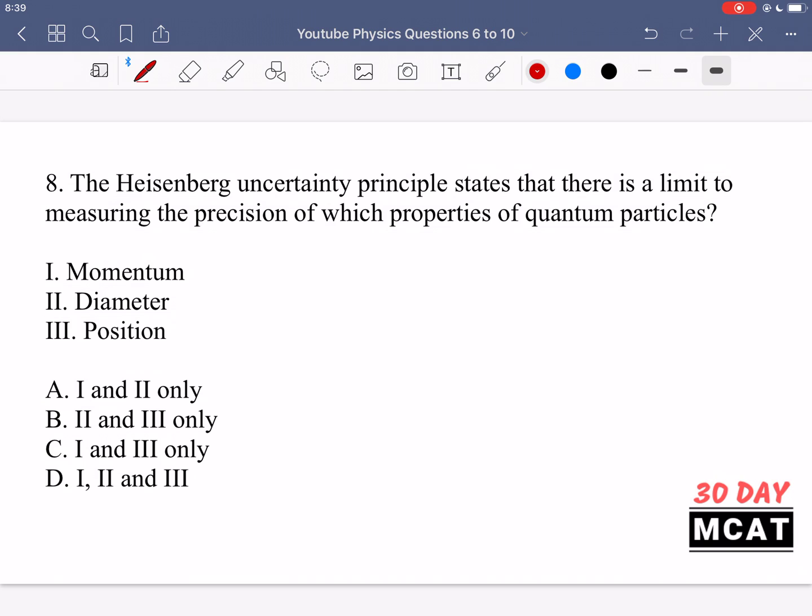In question 8, it says the Heisenberg uncertainty principle states that there is a limit to measuring the precision of which properties of quantum particles. So we're talking about the Heisenberg uncertainty principle. And the definition for this is that you cannot know precisely both the momentum and the position of an object when we're talking on the quantum scale. So it's talking about momentum and position and not diameter. Diameter is not really relevant to the Heisenberg uncertainty principle. So 1 and 3. C is our correct answer.